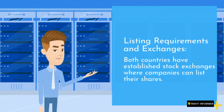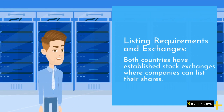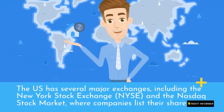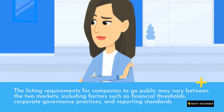Listing Requirements and Exchanges: Both countries have established stock exchanges where companies can list their shares. In the UK, the London Stock Exchange is the primary exchange, with different segments such as the Main Market and the Alternative Investment Market. The US has several major exchanges, including the New York Stock Exchange and the NASDAQ Stock Market. The listing requirements for companies to go public may vary between the two markets, including factors such as financial thresholds, corporate governance practices, and reporting standards.